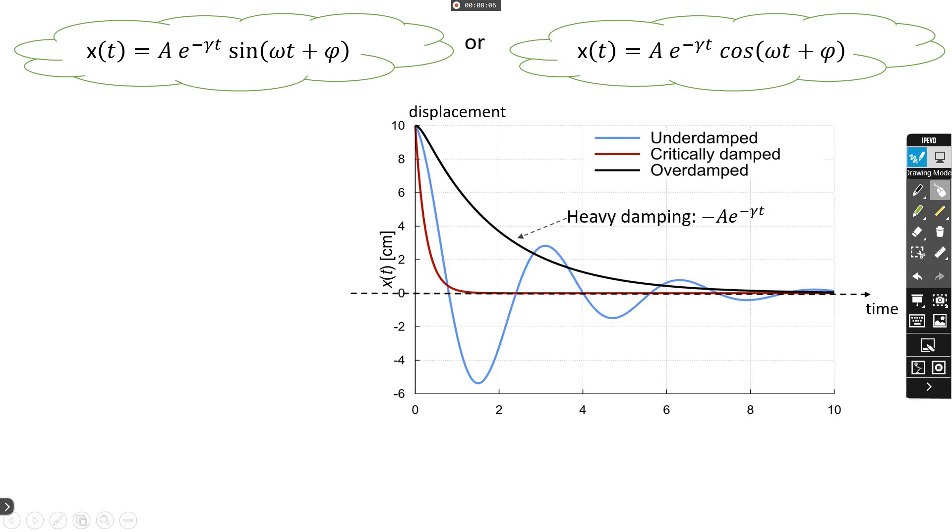The black curve is overdamping defined by heavy damping. The first curve is light damping. Between both curves we have the critical damping. This critical damping where ω equals γ over 2 is optimal.